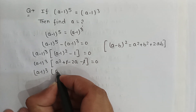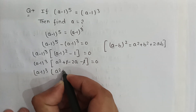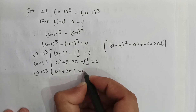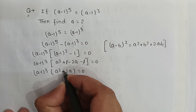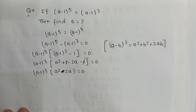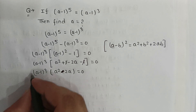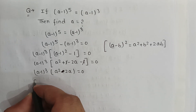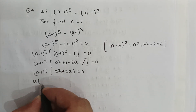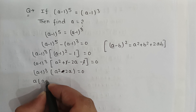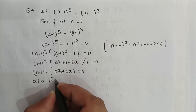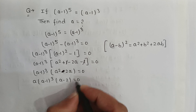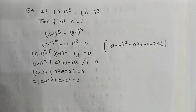So here, after cancellation it will be a squared minus 2a is equal to 0. If we take common a, then it will be a multiplied by (a minus 1) to the power 3 multiplied by (a minus 2) is equal to 0.